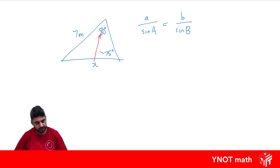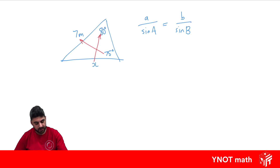Let's make note of which sides are opposite the angles. The 7-metre side is opposite the 75-degree angle, and x is opposite the 80-degree angle. These are the pairs we use in the sine rule, and this satisfies the condition where we have two angles and two sides with only one unknown. So: x over sine of 80 equals 7 over sine of 75.